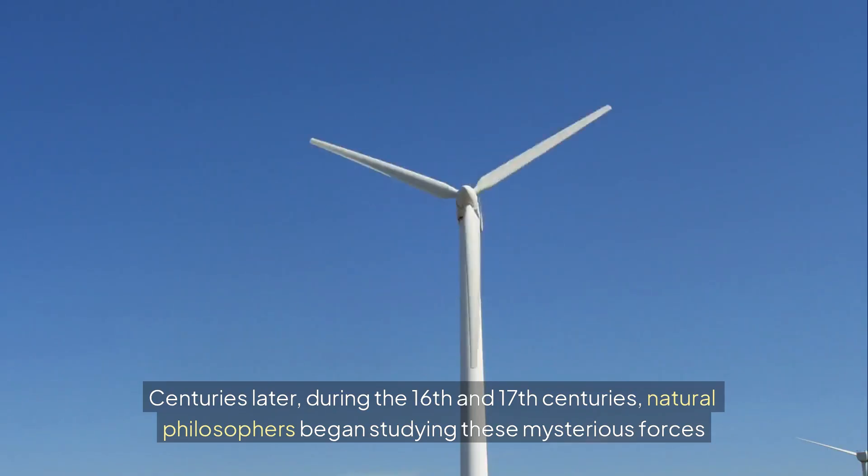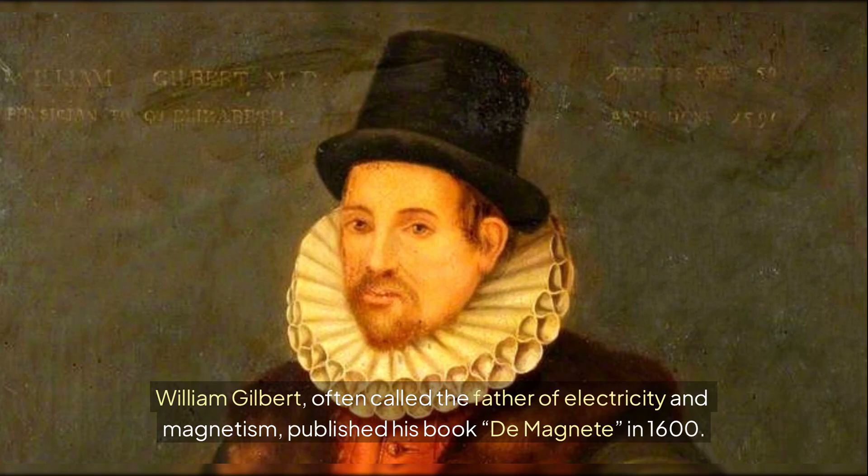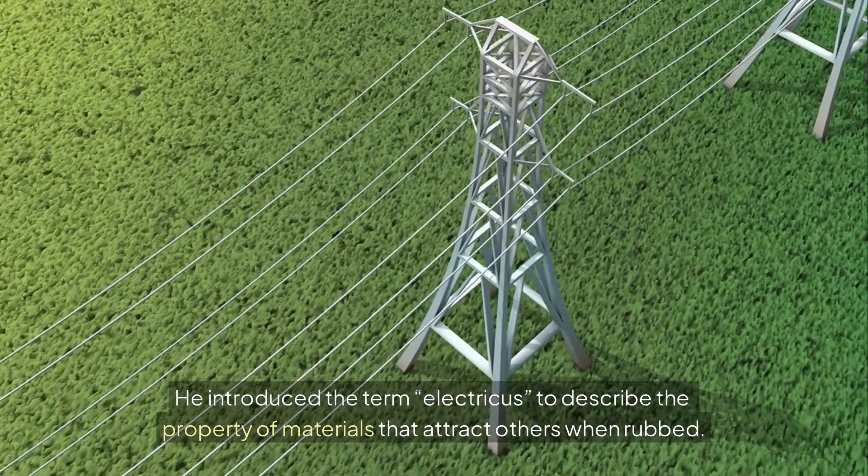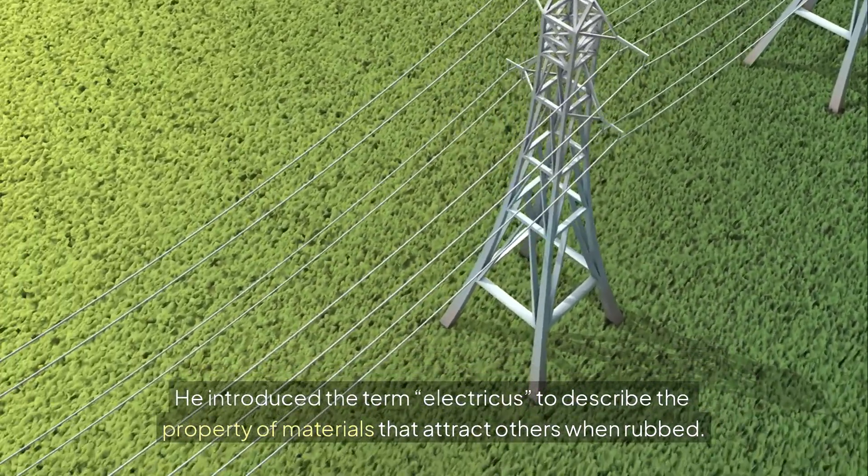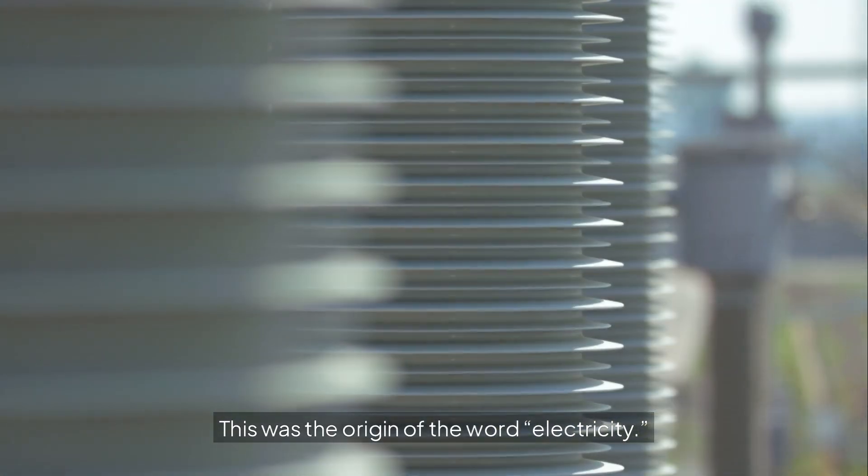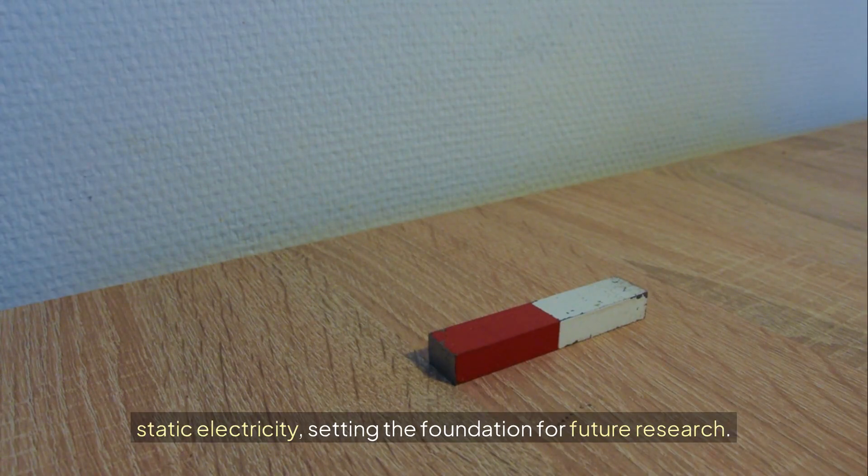Centuries later, during the 16th and 17th centuries, natural philosophers began studying these mysterious forces more seriously. William Gilbert, often called the father of electricity and magnetism, published his book De Magnete in 1600. He introduced the term electricus to describe the property of materials that attract others when rubbed. This was the origin of the word electricity. Gilbert's work distinguished between magnetism and static electricity, setting the foundation for future research.